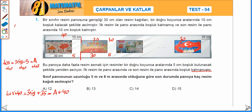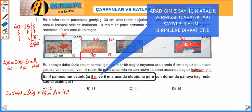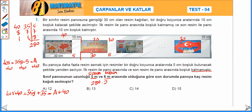40'ın ve 35'in ortak katını bulduğumuzda 5'e böleriz 8 ve 7. 7'ye böleriz 1, 8'e böleriz 1. Çünkü 7 ve 8 aralarında asal sayı olduğu için başka ortak bölünü yoktur. 5, 7 ve 8'i çarptığımızda 280 olarak bulunuyor. Ama panonun uzunluğu 5 metre ile 6 metre arasında yani 500 santimetre ile 600 santimetre arasında olacak. 280'nin 500 ile 600 arasındaki katını bulduğumuzda 280'nin iki katını alırız, 560 olarak bulunur.